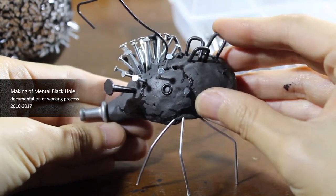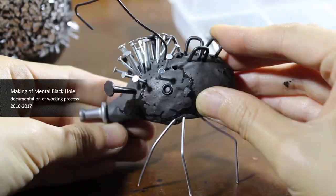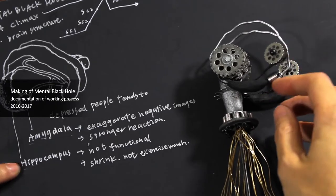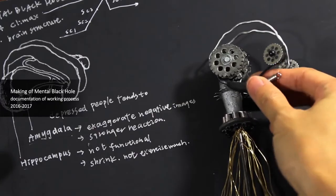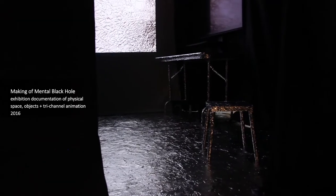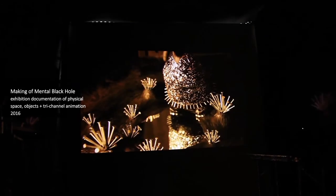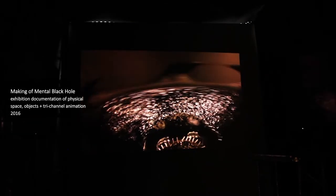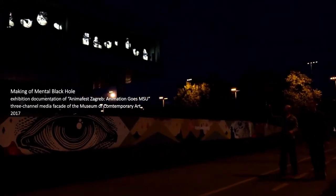Mental Black Hole examines how people perceive depression as opposed to the invisible activity taking place in the brain. This media-based installation in the form of a physical space with three-channel projection presents a creative interpretation of the amygdala and hippocampus as a physical demonstration of depression.